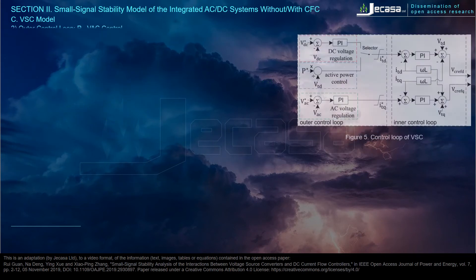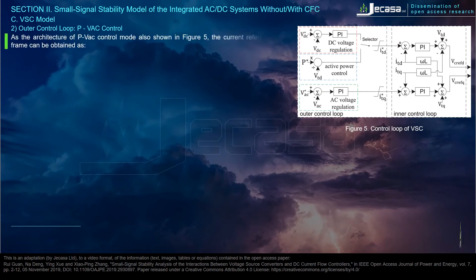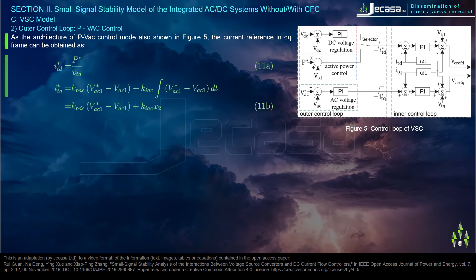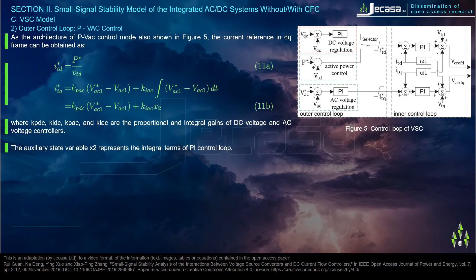Outer control loop 2 — P/VAC control: as shown in Figure 5, the current reference in the DQ frame can be obtained accordingly, where Kpdc, Kidc, Kpac, and Kiac are the proportional and integral gains of the DC voltage and AC voltage controllers. The auxiliary state variable x2 represents the integral term of the PI control loop.